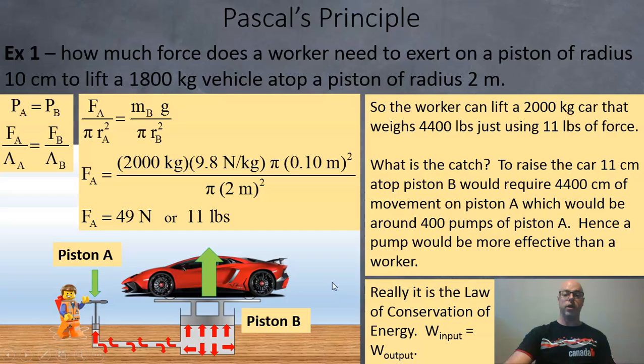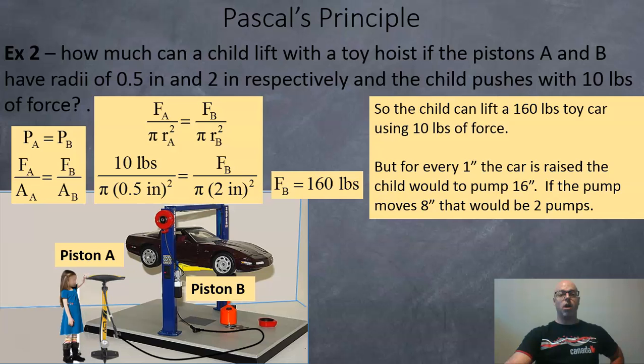Here's another example. Let's use imperial units this time. How much can a child lift with a toy hoist if the pistons A and B have radii of 0.5 inches and 2 inches respectively and the child pushes with 10 pounds of force?